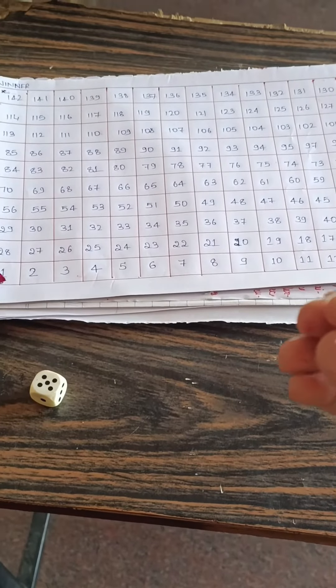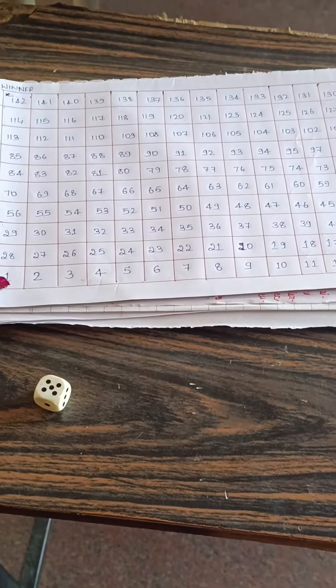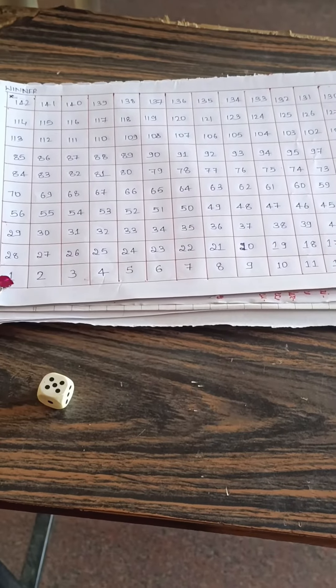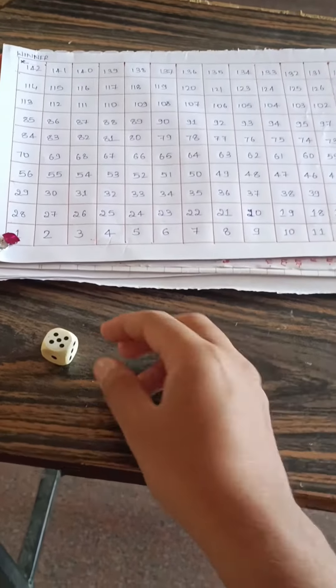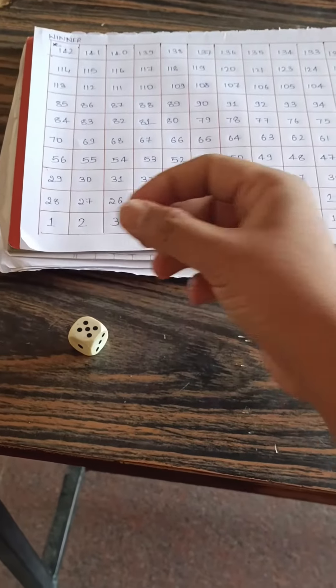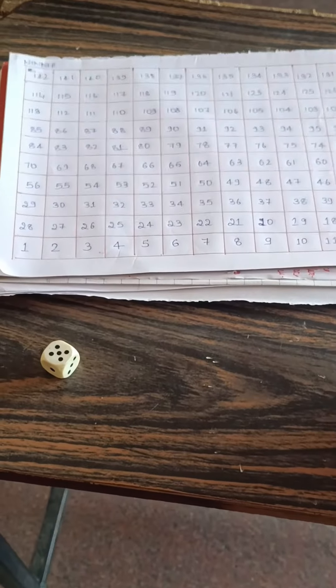How to play the game? This game is played to understand the tables and they will never forget the tables. This game can be simultaneously played by 6 to 7 kids also.